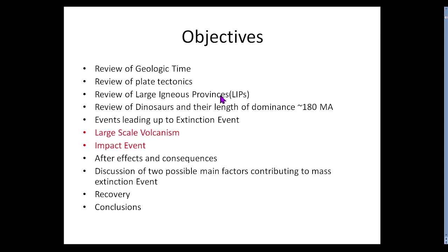Large igneous provinces are almost always associated with mass extinction events, and this one is no exception. There is a large igneous province in the form of the Deccan Traps that shows up right around 67 million years ago, and it definitely appears to have contributed to climate change prior to the impact event. A good scenario is a tag team between these two that really caused this extinction.